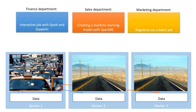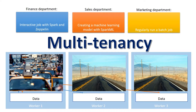So what you basically get is this: at one worker node there is a lot of traffic and the others are basically doing nothing. So what YARN provides is something called multi-tenancy. What it basically means is that you can have multiple groups of Hadoop users that can do different tasks without interfering with each other.